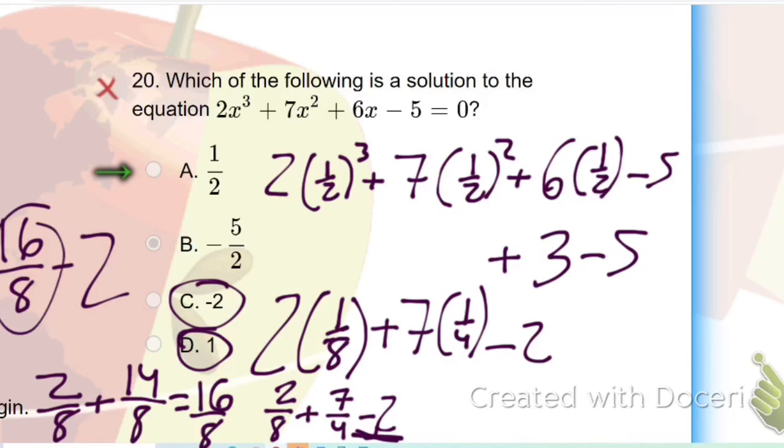Well 16/8 is 2. So 2 minus 2 equals 0. And that's why A is the answer.